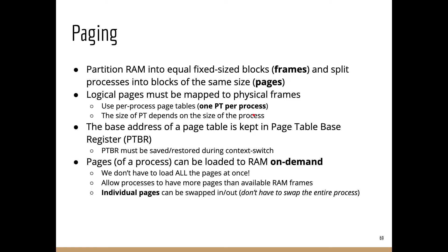With demand paging, we don't have to load all the pages at once. This is a benefit for large processes that require a significantly large number of pages. If a process requires 100 pages, not all 100 pages have to be loaded in RAM — only those actually needed or referenced by the process are loaded. As a side effect, a large process will not monopolize all the available RAM. Since it is possible to allocate only a fraction of the actual process size, the OS can manage a higher number of concurrent processes.